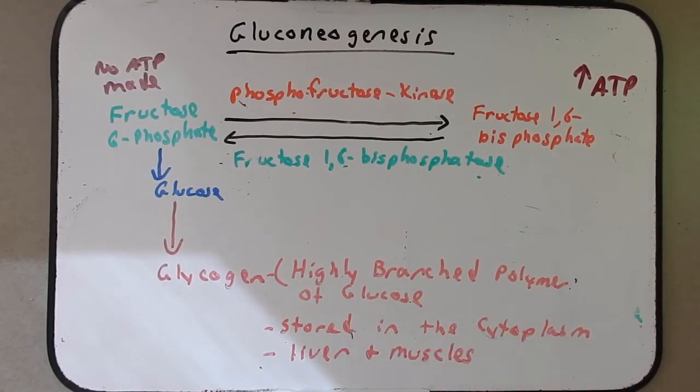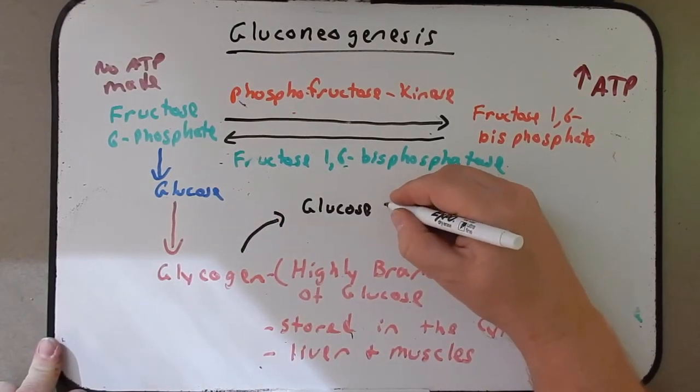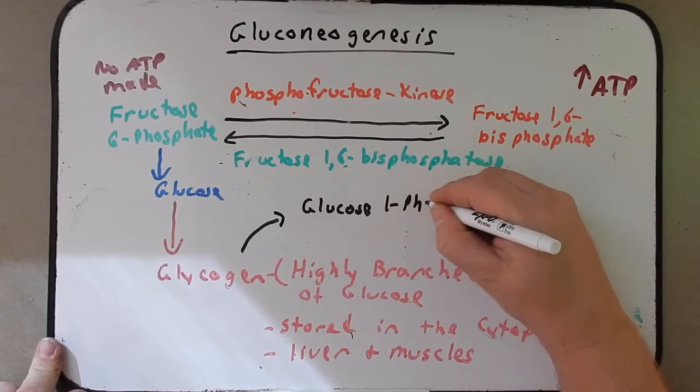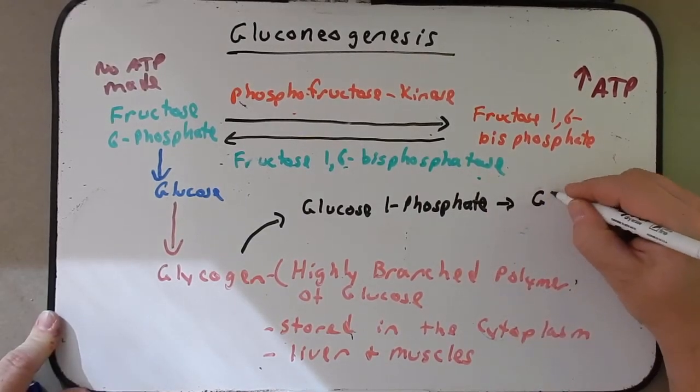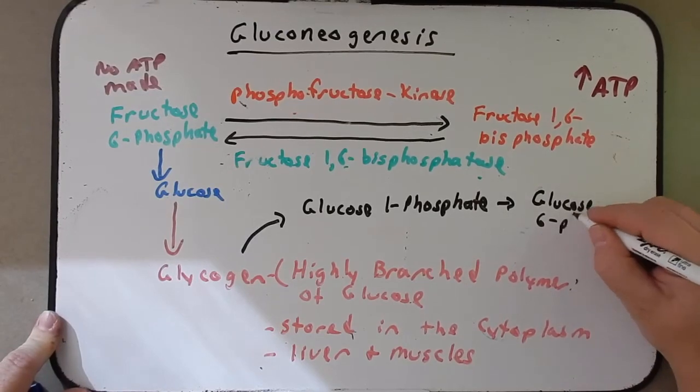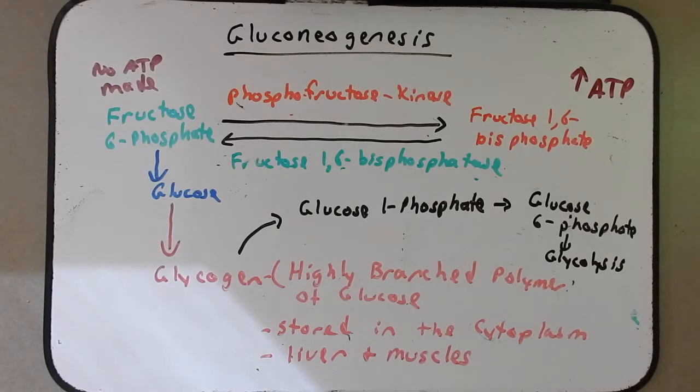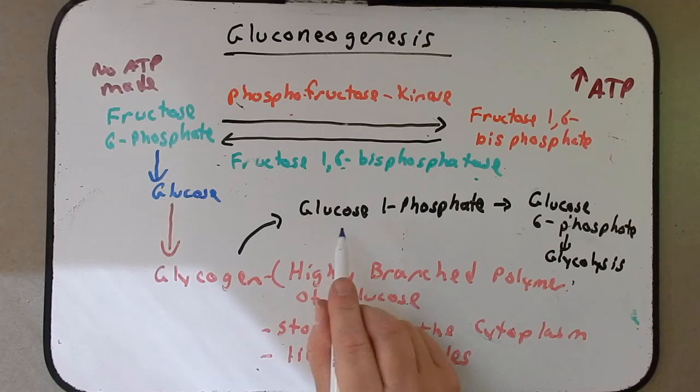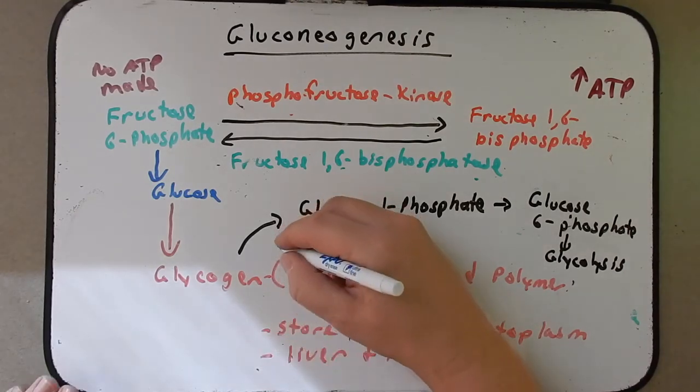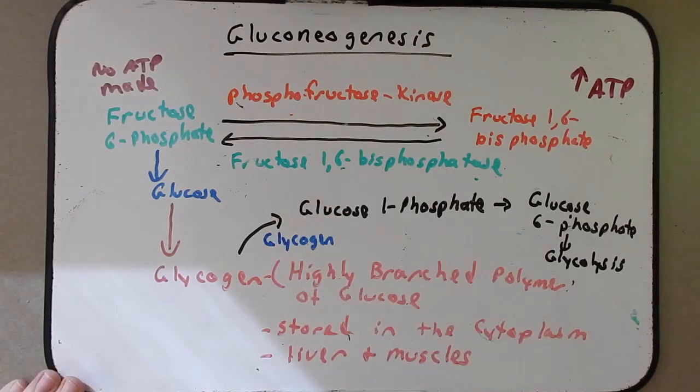Now how do we get glucose from glycogen once we want to use it again? Well, we never make glucose again exactly. But rather what happens is glycogen is converted into glucose 1-phosphate, which is then converted into glucose 6-phosphate, which then enters into glycolysis. Now I want you to know one enzyme here that I didn't mention, and that is the enzyme that converts glycogen into glucose 1-phosphate, and that is called glycogen phosphorylase.